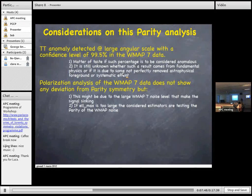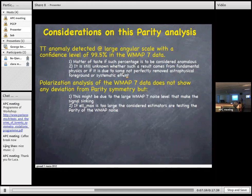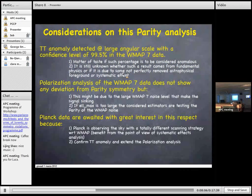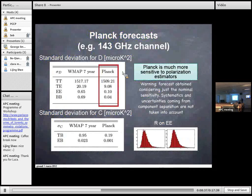Moreover, it is still unknown if such a result comes from fundamental physics or if it is due to some not perfectly removed foreground contamination or other systematic effects. Polarization data, the polarization analysis of WMAP7 data does not show any deviation from this kind of analysis for parity symmetry, but this might be due to the large noise level of that set of data. So that's why the Planck data are awaited with great interest in this respect. First of all, Planck is observing the sky with a totally different scanning strategy with respect to WMAP, and so this represents a benefit from the point of view of the systematic effects analysis. And of course, Planck is capable to confirm or discard this TT anomaly or understand the polarization.